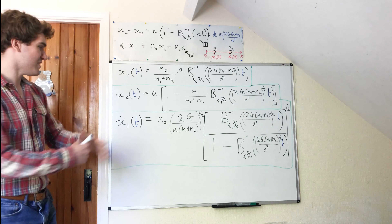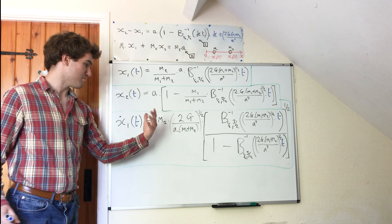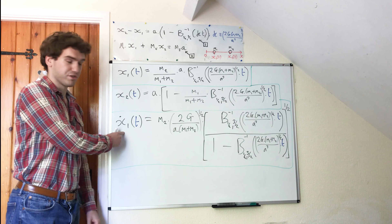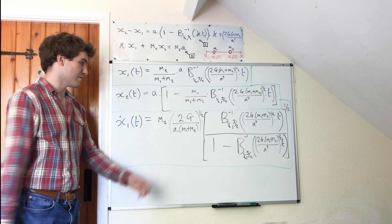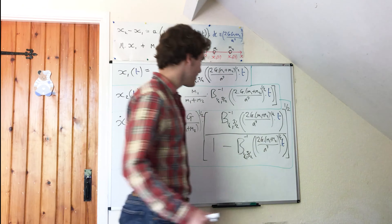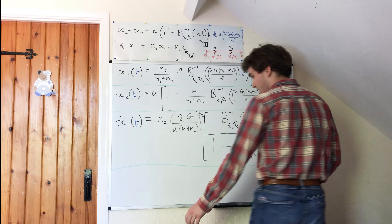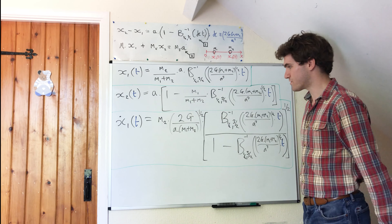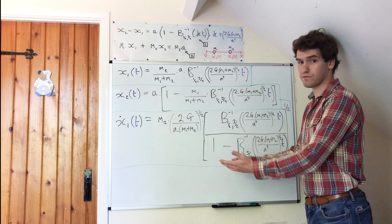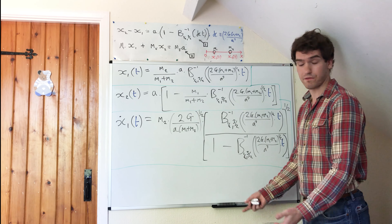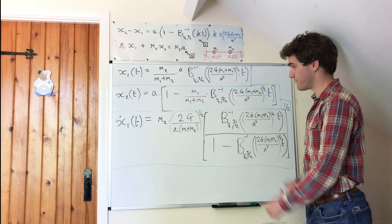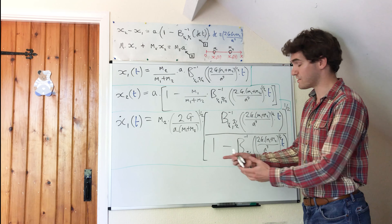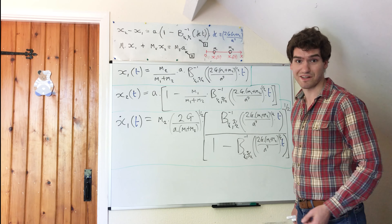So this is the full solution of x1 dot of t, the velocity of x1 as a function of time. I've obviously skipped a few steps, but please verify this yourself if you're not fully convinced, and please let me know if I have indeed made any mistakes.